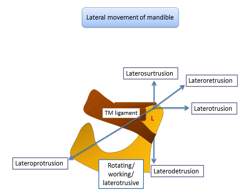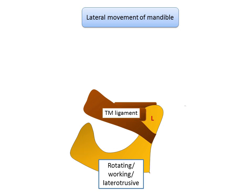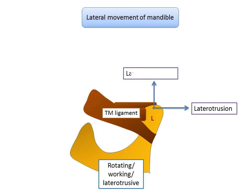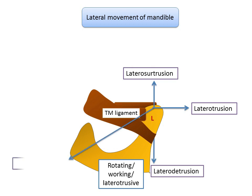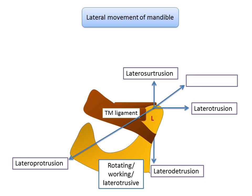This is a two-dimensional image, so imagine the arrows in a three-dimensional plane. We are viewing the mandible from the sagittal side, that is from the left side. So the left condyle is in front of us: lateral protrusion moves the jaw outward, lateral detrusion moves it down, lateral protrusion upward moves it up, lateral retrusion moves it back, and lateral trusion moves it toward the viewer. The meso arrow is just for reference.